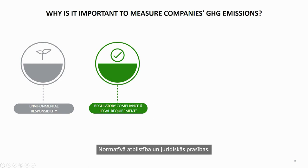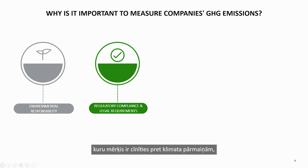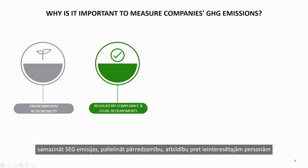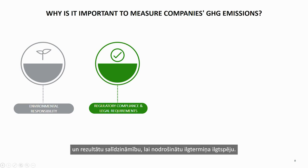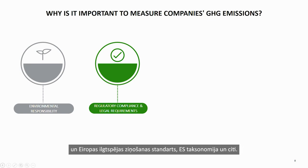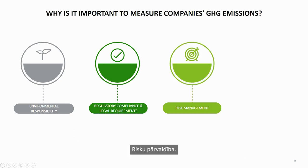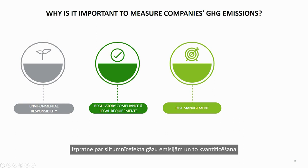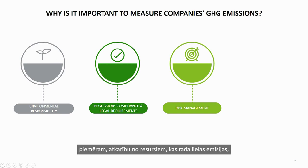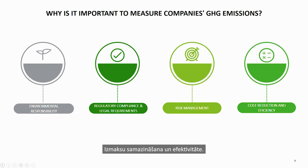Regulatory compliance and legal requirements: within the European Union and elsewhere worldwide, there are many regulatory initiatives aimed at combating climate change, reducing GHG emissions, increasing transparency, accountability to stakeholders, and comparability of results to ensure long-term sustainability. To name a few: the Corporate Social Responsibility Directive, European Sustainability Reporting Standard, the EU Taxonomy, and others. Risk management: understanding and quantifying greenhouse gas emissions can help companies identify and manage climate-related risks, such as dependencies on emission-heavy resources or changing regulations.